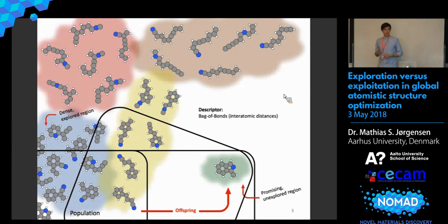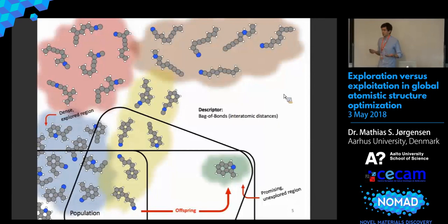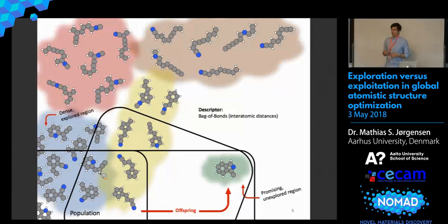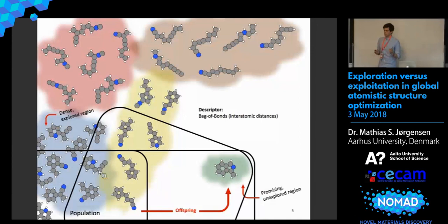Imagine we are in the middle of a structure search. These are all the structures we have currently found. The most stable structures are in what we call the population — these are the structures we evolve into better structures. If we perturb or combine some of these structures, we can produce an offspring structure. In this case, the offspring structure is stable enough to enter the population. It's quite interesting because it's the only structure with two rings out of all these structures, and it resembles quite well the global minimum, which has two six-membered rings. But the algorithm doesn't know that yet, so we apply clustering.